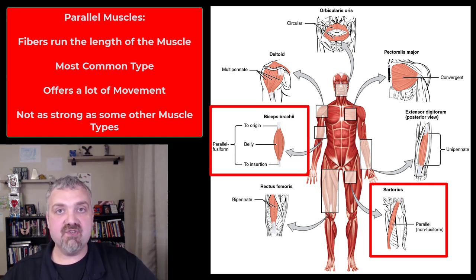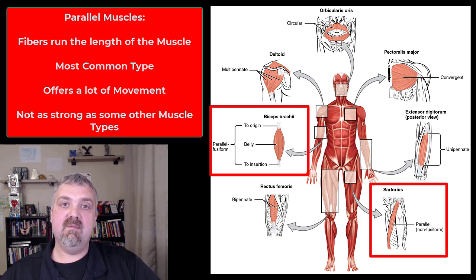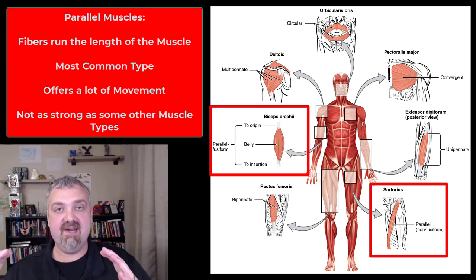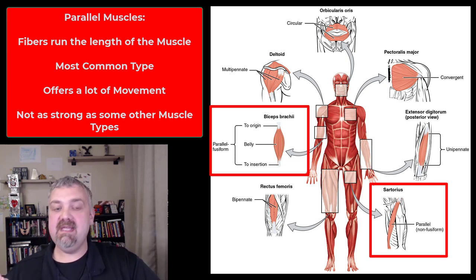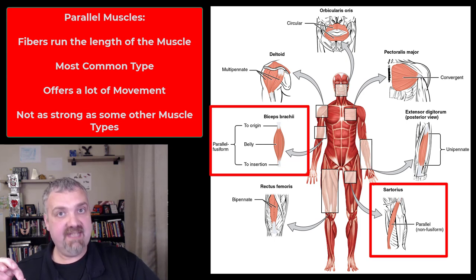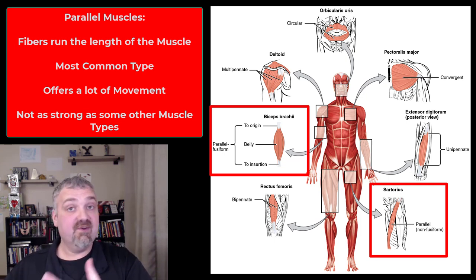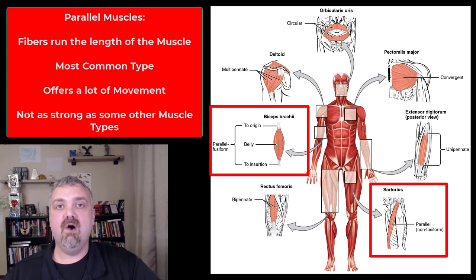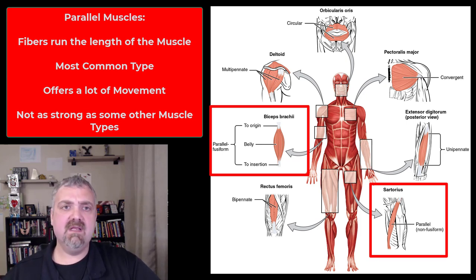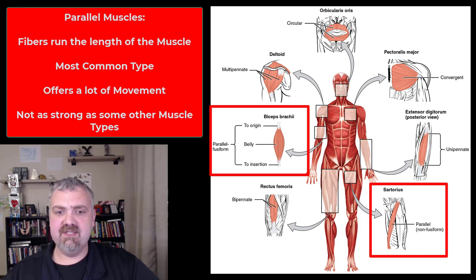Tension in a parallel muscle — how much weight you can move — depends on its cross-sectional area. Obviously, if a muscle is bigger, it's going to be more powerful. One square inch of cross-sectional muscle will develop about 50 pounds of tension. So if somebody's bicep is twice as big as yours, it can generally generate a lot more force. The key example is the biceps brachii, but also the sartorius.